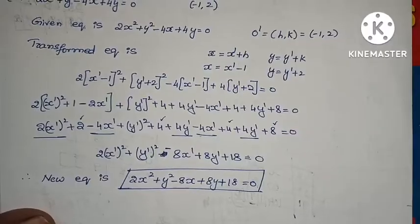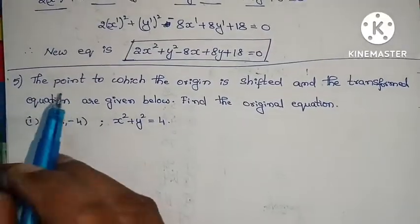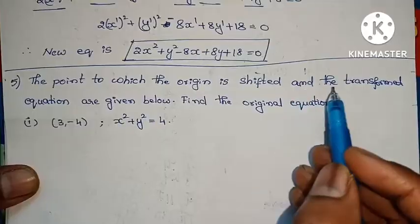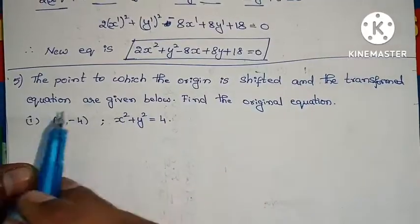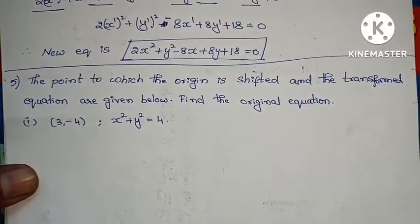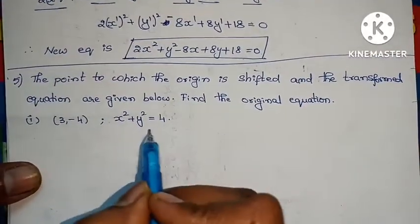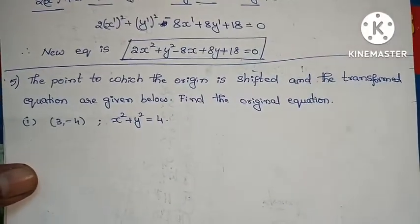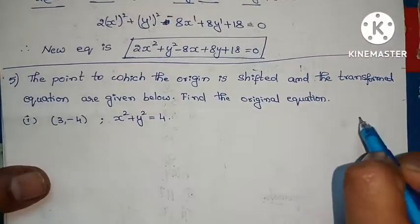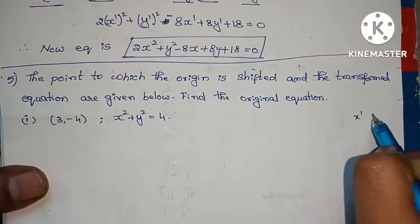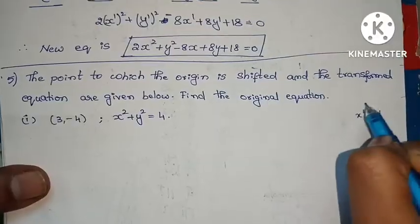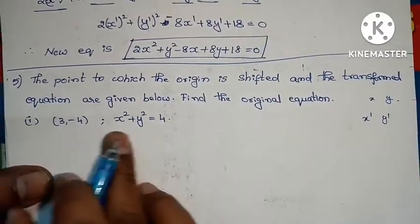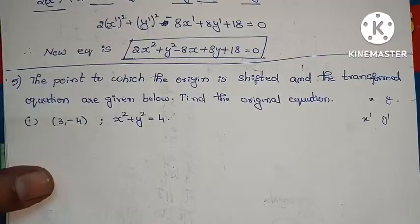Next problem: the point to which the origin is shifted and the transformed equations are given. Find the original equation. In this case x dash and y dash are given; we find the original equation using x dash and y dash values.